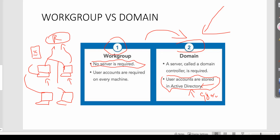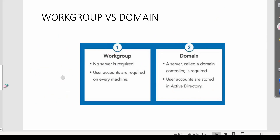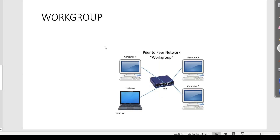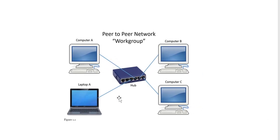Now for a more official understanding: a workgroup is a peer network. It could be a hub, a Wi-Fi inside your home network, or a lab environment — for example, a business lab connected to a switch that isn't joined to any servers. You're just managing machines as a group.